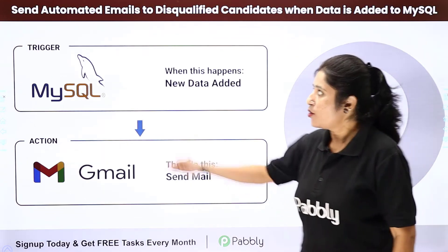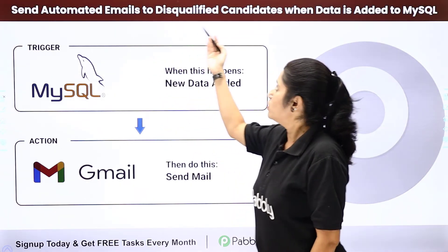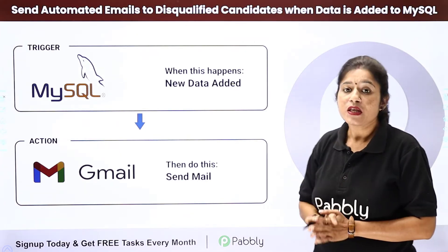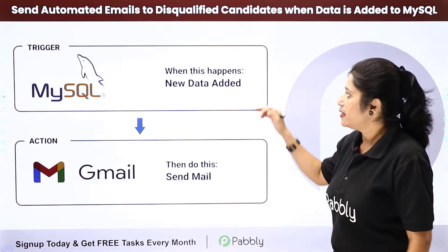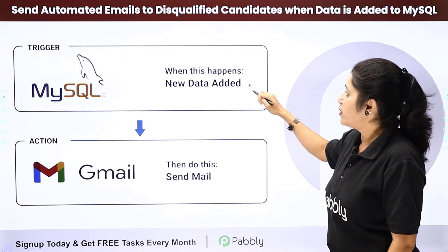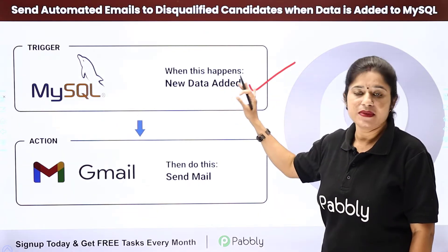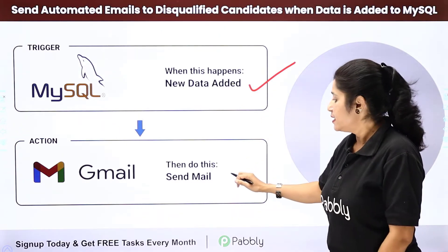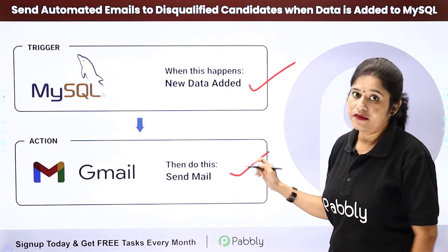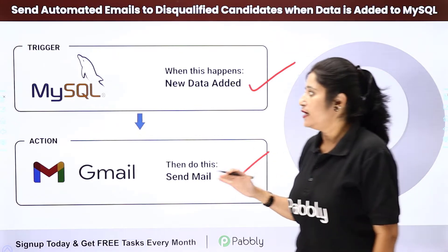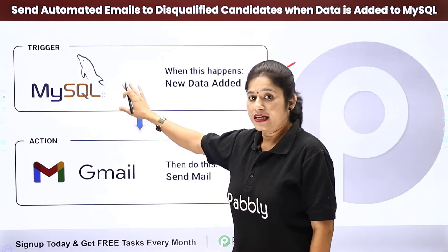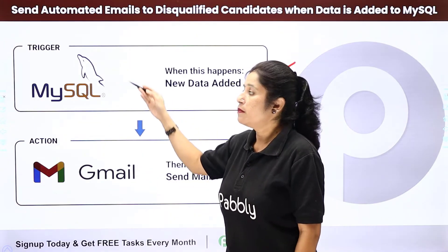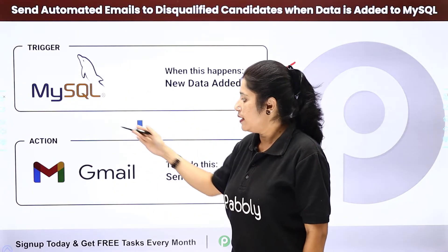In this video we are going to learn how you can send automated emails to disqualified candidates when data is added to MySQL. The idea is that you are adding the details of various candidates in your MySQL database table, and you want to send emails only to the disqualified candidates. For that you need to create a connection between MySQL and Gmail, where MySQL is the trigger application and Gmail is the action application.